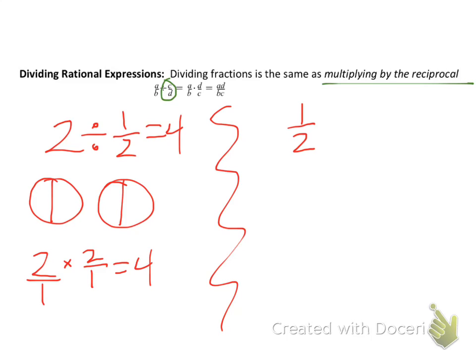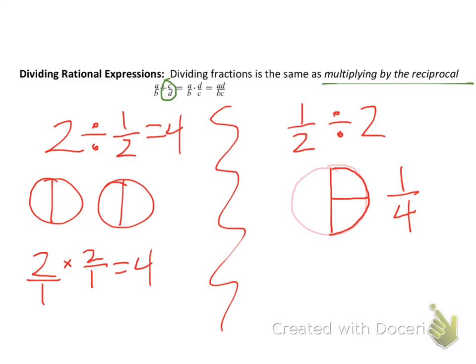Not to be confused with 1/2 ÷ 2: if you have half a pie and cut it into 2 pieces, you get 1/4 of the whole. So 1/2 × 1/2 = 1/4. It's important that you flip the second fraction, not the first one.